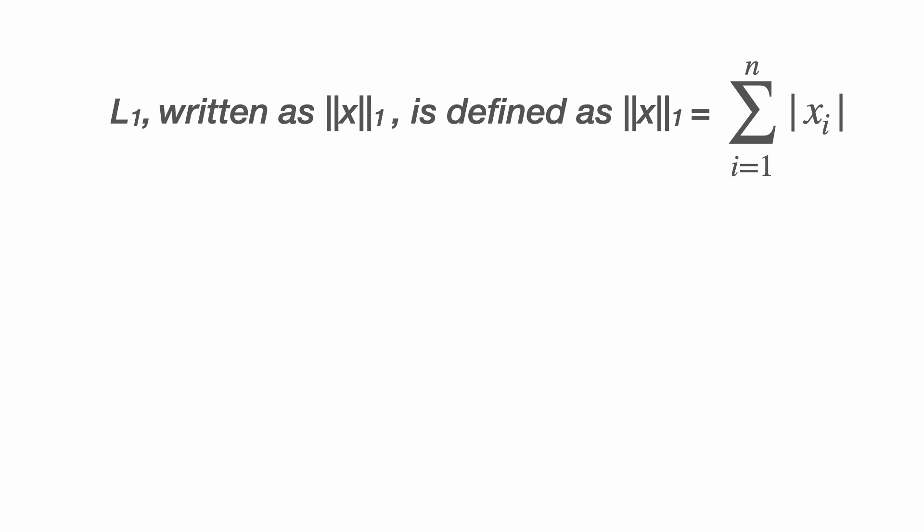So for example, the L1 norm is a sum of the absolute value of the components of x, which in two dimensions gives the absolute value of x1 plus the absolute value of x2.